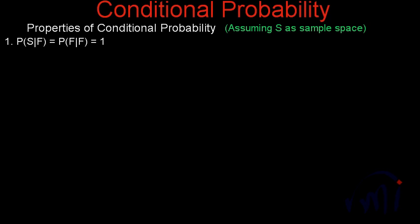Hi, in this video we're going to discuss the properties of conditional probability. Here we are assuming S as a sample space. There are total three properties.